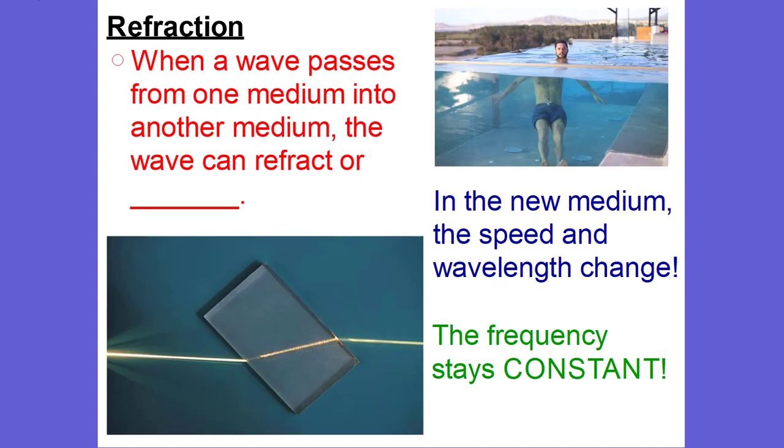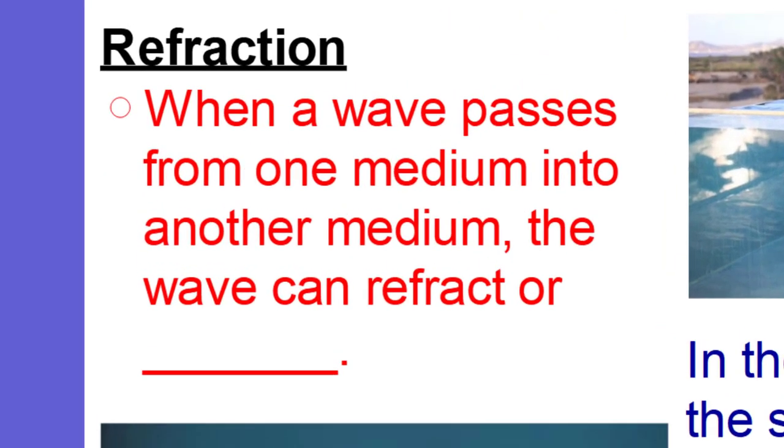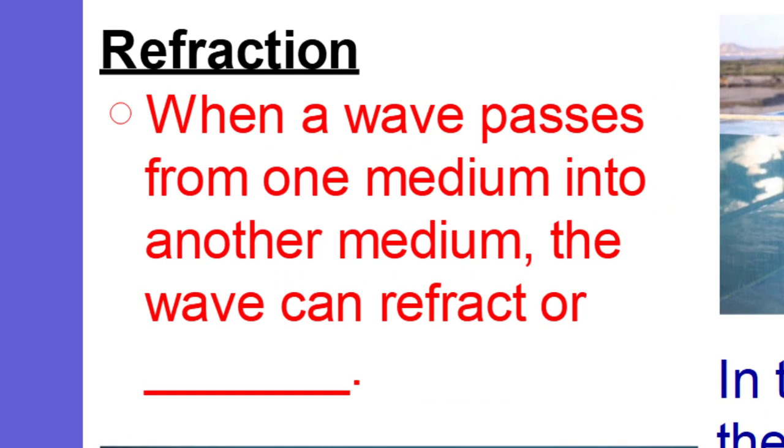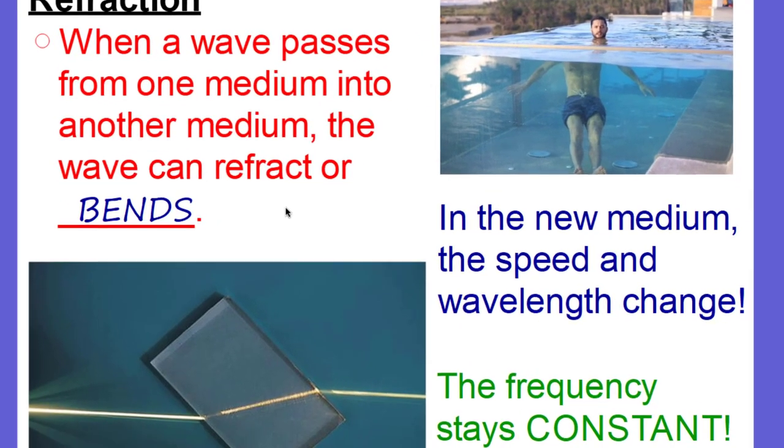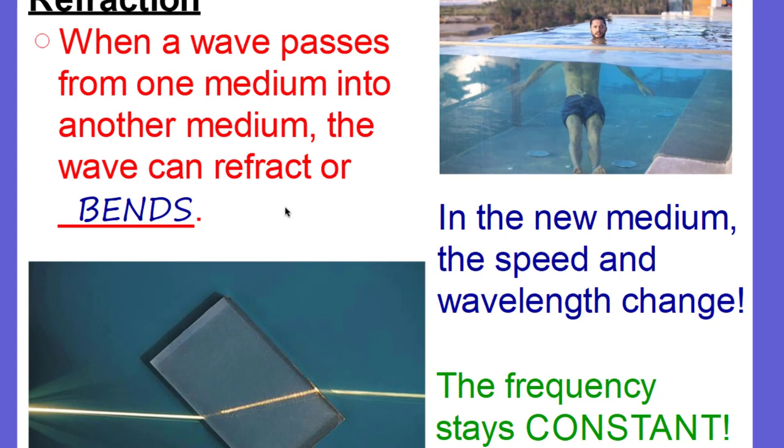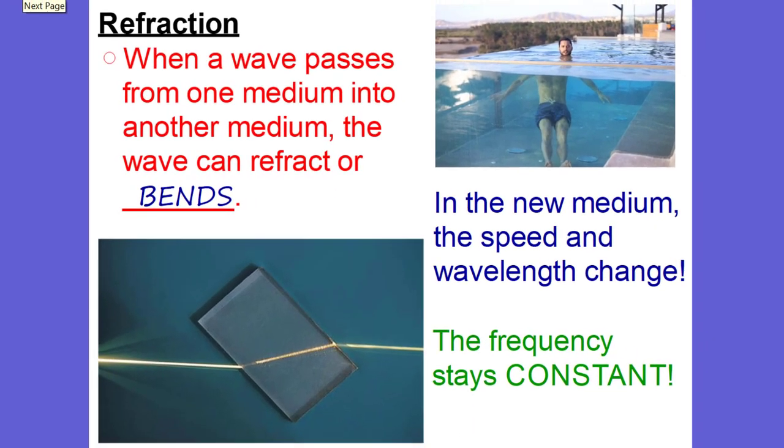We also have refraction. Refraction is when a wave passes from one medium into another medium, that wave can refract or what we call bend. And in the new medium, the speed and the wavelength change. The speed, like let's say it goes to a denser medium like quartz or water, from air to quartz or air to water, that speed is actually going to get less. That wavelength is actually going to get less. But the frequency stays constant. The frequency stays constant. It does not change from one medium to the next.